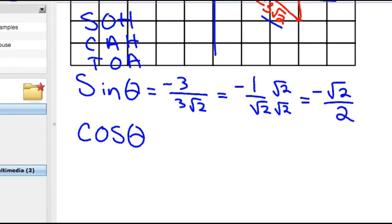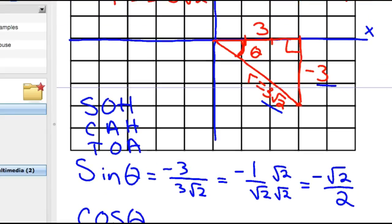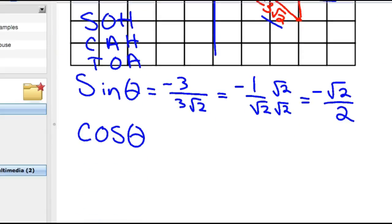Cosine theta would be very similar. It's adjacent over hypotenuse. Here's adjacent, and hypotenuse is 3 root 2. So cosine theta would be 3 over 3 root 2, which simplifies to 1 over root 2. You can rationalize that denominator by multiplying by root 2 over root 2, which is root 2 over 2.